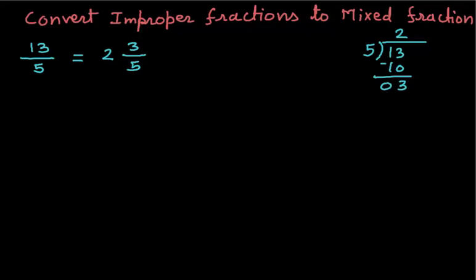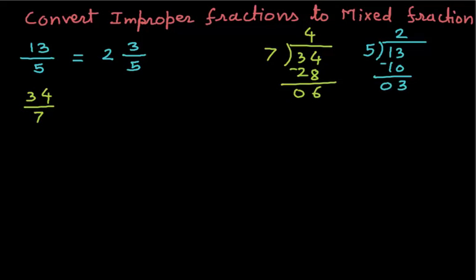Let me consider another example: 34 over 7. We will actually divide 34 by 7. 7 times 4 is 28. Now the remainder is 6 and the quotient is 4. So we will write the quotient on the side, remainder on the top, and denominator 7 will remain as it is.